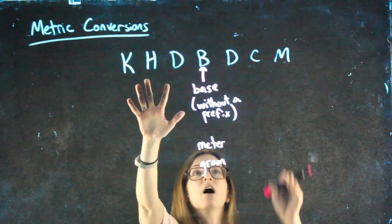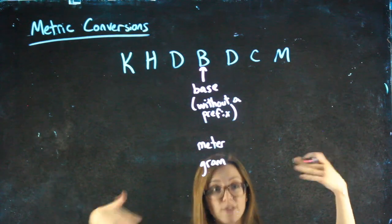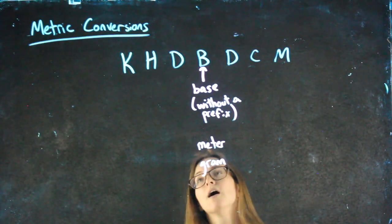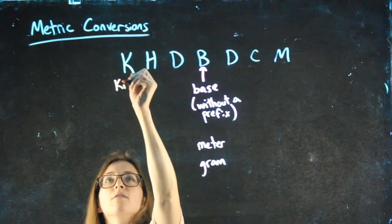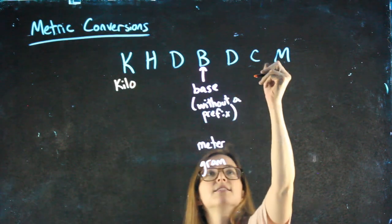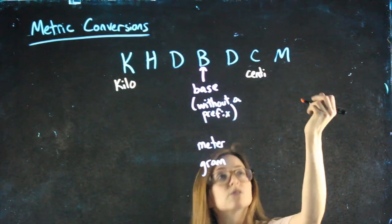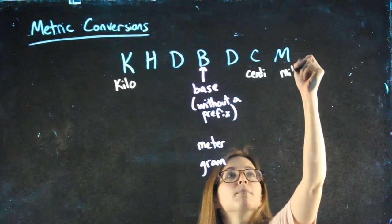And all of these other letters stand for the prefixes themselves. So the K is for kilo. The C is for centi. I'm only giving the ones we actually use. And the M is for milli.